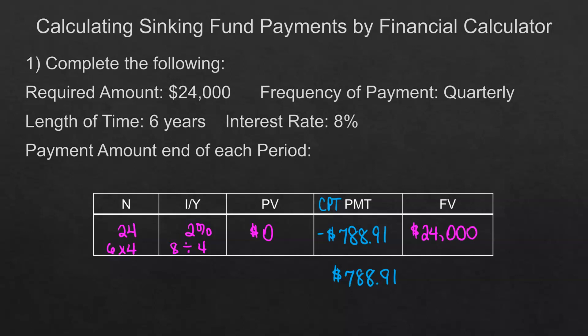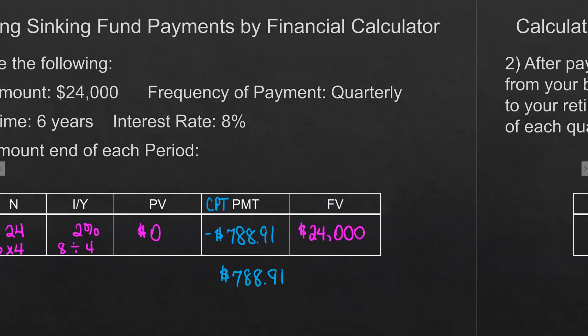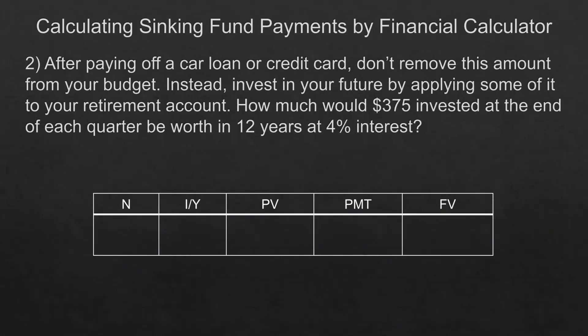When you know the future value, that's when they're listing the payment as a positive. Here's our next example: after paying off a car loan or credit card, don't remove this amount from your budget — instead, invest in your future by applying some of it to your retirement account. How much would $375 invested at the end of each quarter be worth in 12 years at 4% interest?